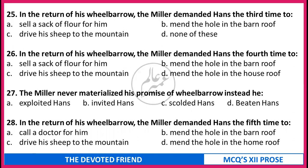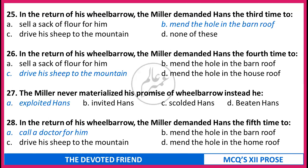In return for his wheelbarrow, the Miller demanded Hans the third time (a) to sell a sack of flour for him, (b) mend the hole in the barn roof, (c) drive his sheep to the mountain, (d) none of these. The Miller never materialized his promise of the wheelbarrow; instead he (a) exploited Hans, (b) invited Hans, (c) scolded Hans, (d) beaten Hans. In return for his wheelbarrow, the Miller demanded Hans the fifth time (a) to call a doctor for him, (b) mend the hole in the barn roof, (c) drive his sheep to the mountain, (d) mend the hole in the home roof. Correct answers: 25 - mend a hole in the barn roof. 26 - drive his sheep to the mountain. 27 - exploited Hans. 28 - call a doctor for him.